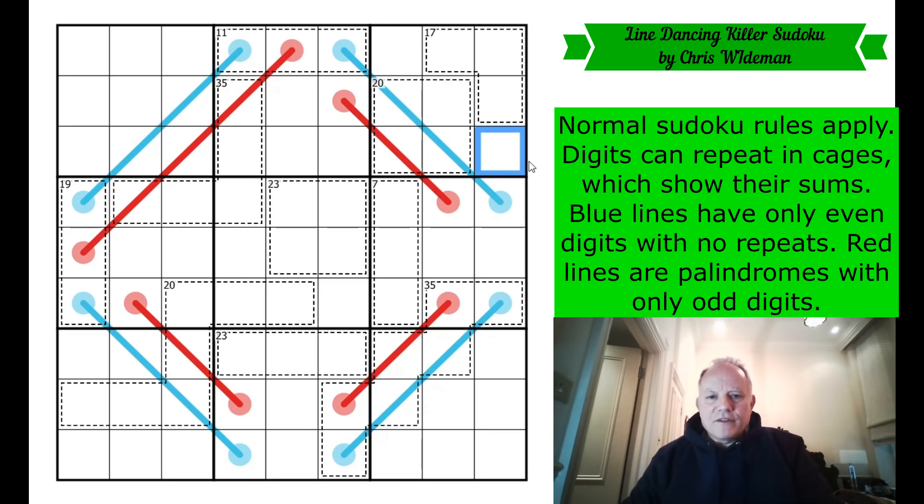Blue lines have only even digits with no repeats. Red lines are palindromes with only odd digits. So obviously they do have repeats in those cells. A palindrome reads the same both ways. Lines of the same length have the same sums. So a very unusual set of rules. These lines dancing around the grid and some killer cages. No digits given, of course. We never expect that anymore. But do give it a try on the link under the video. Remember, digits can repeat in cages. And good luck. And I'm going to start now. Let's get cracking.